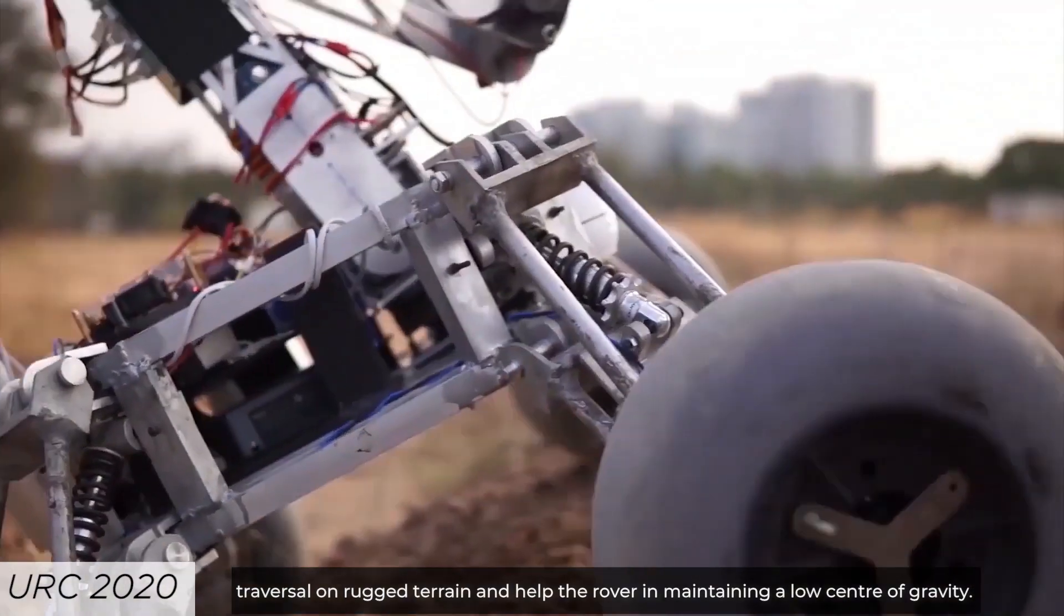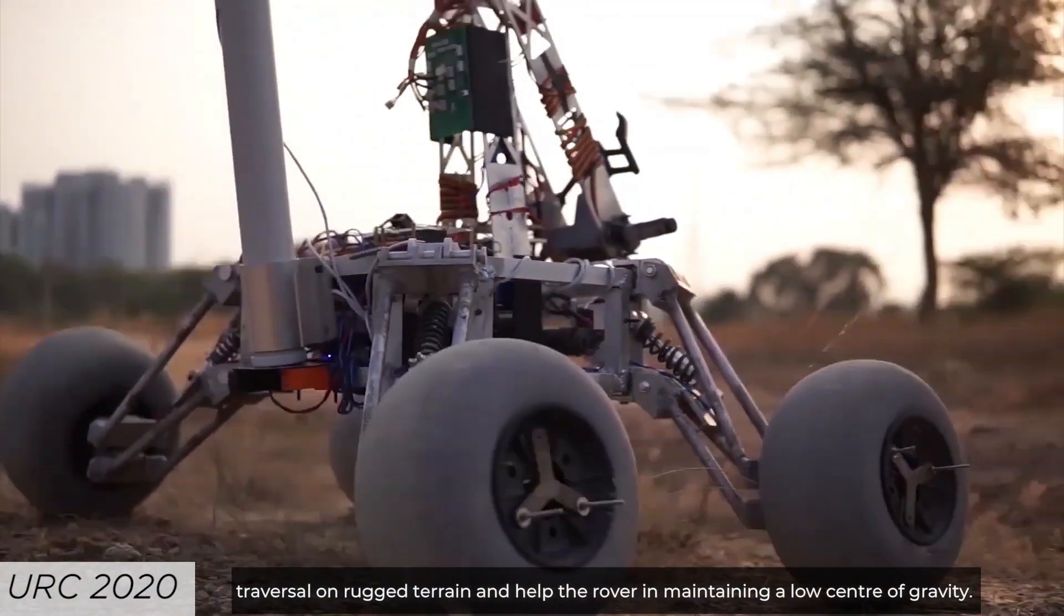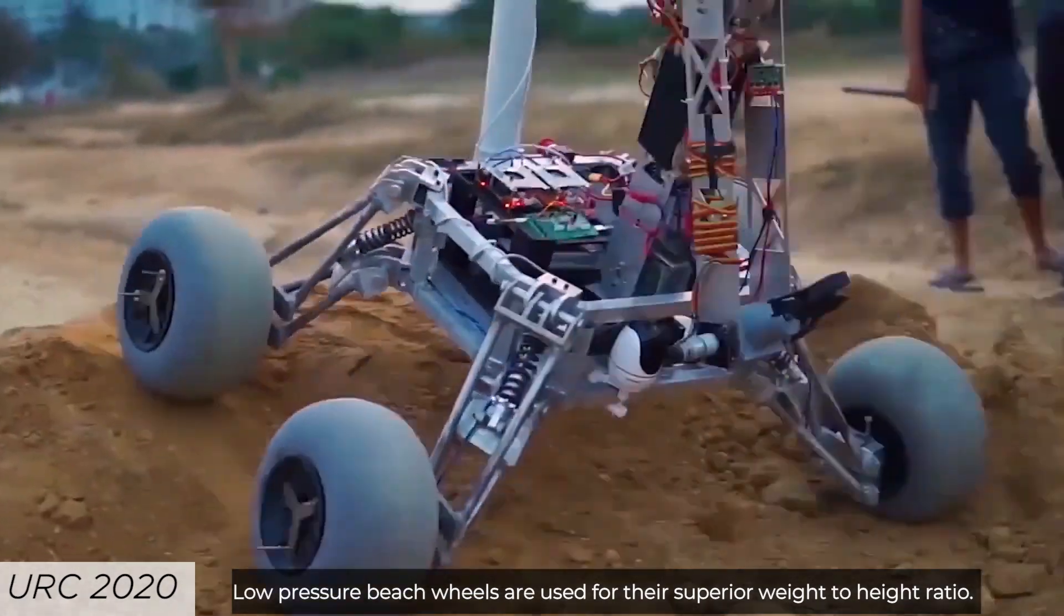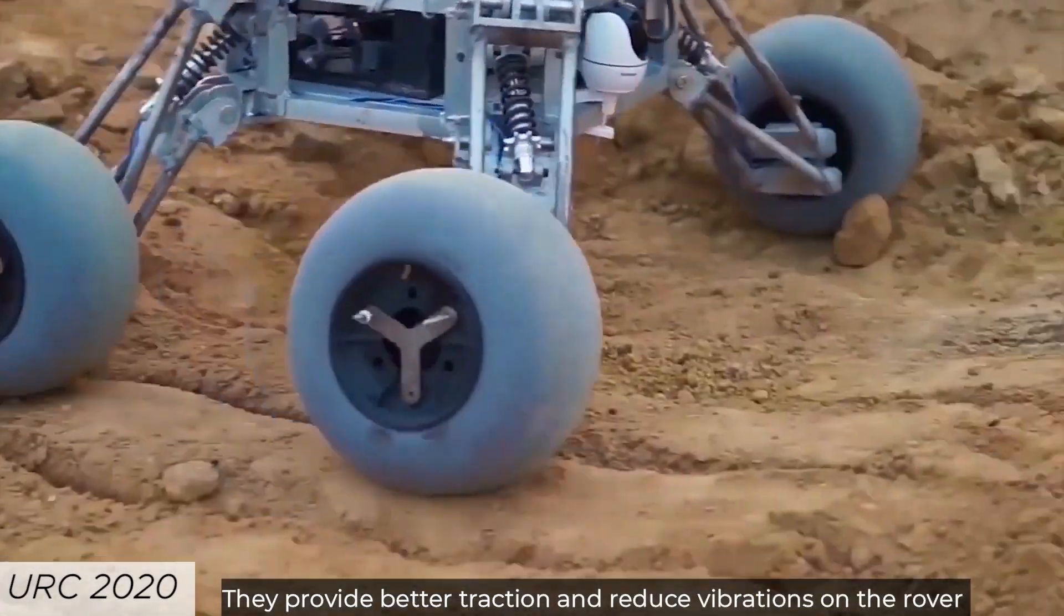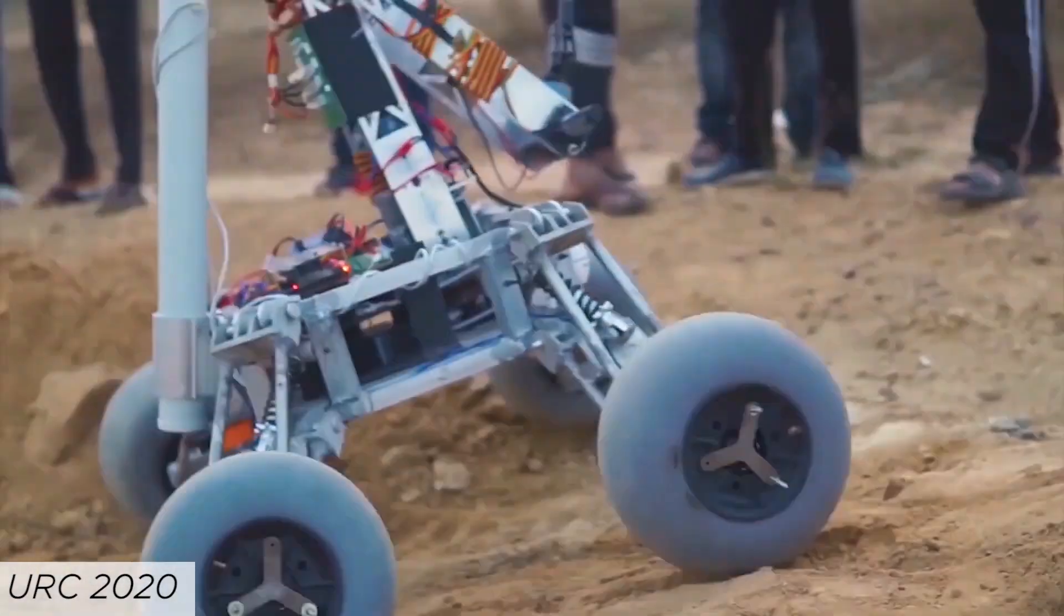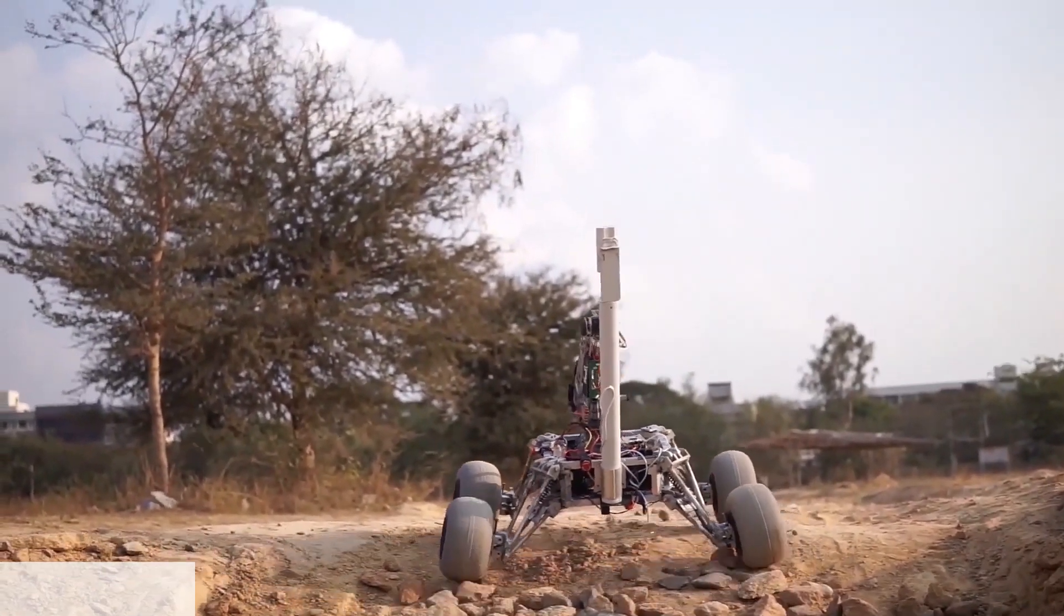Low pressure beach wheels are used for their superior width-to-height ratio. They provide better traction and reduce vibrations on the rover, thus ensuring the safety and smooth working of onboard systems.